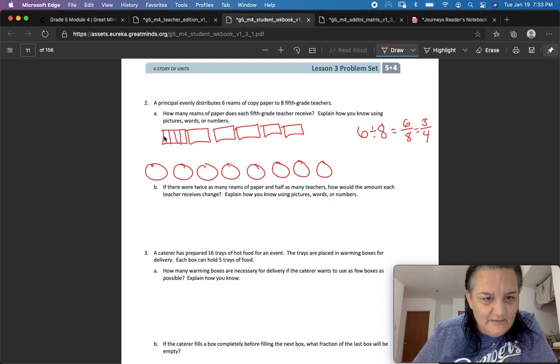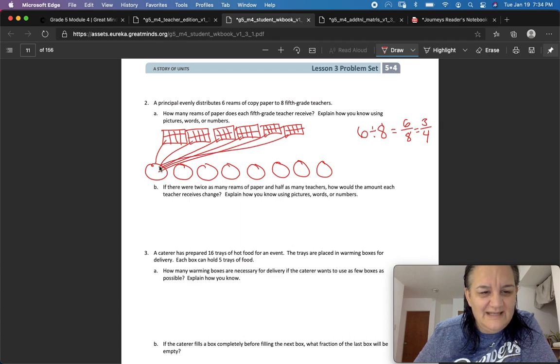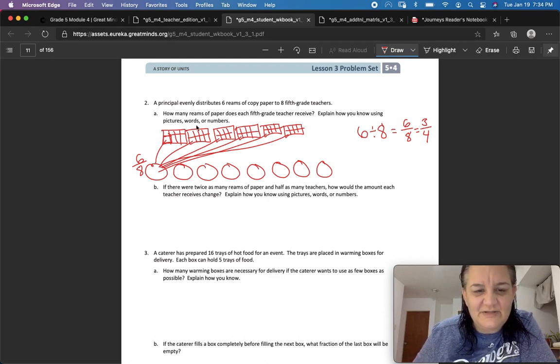Well, we know that six divided by eight is six eighths or three fourths. But for the sake of argument here, we're just going to split this into eight. Two, three, four, there's eight. Eight, eight, eight, eight, eight, eight, eight. And I'm going to give one to this person, one to that person, one, one, one, one, until that person has how many of those? Six eighths. And each person gets six eighths then. Explain how you know using pictures, words, or numbers. So there was our numbers. And there's our picture.